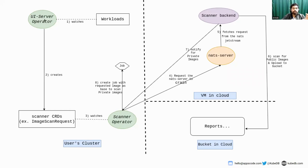So this is the whole architecture. You need to install the UI server and scanner operator, and the other things will be automated. The workloads will be watched, the Image Scan Request will be created by the UI server operator, and the scanner operator passes the request to the net server. The scanner backend fetches the request, checks whether it is public or private — if private it creates a job, if public it scans and uploads the reports to the cloud bucket.